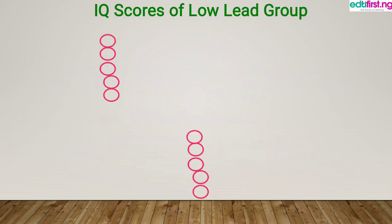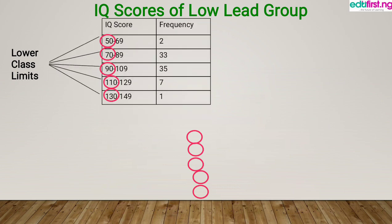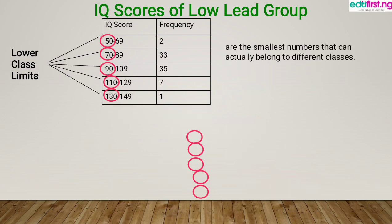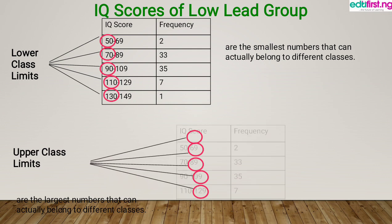In a frequency distribution table, we have what we call the lower class limits, which is illustrated with the table above. These are the smallest numbers that can actually belong to different classes. And we have the upper class limits, which are the largest numbers that can actually belong to different classes, as illustrated below.